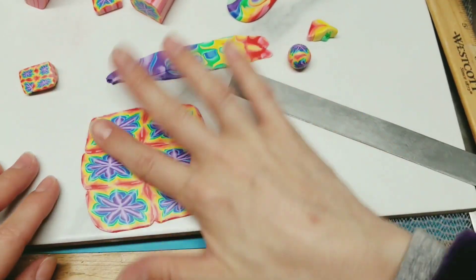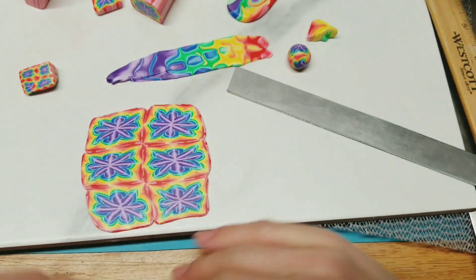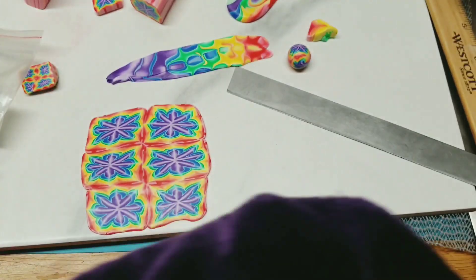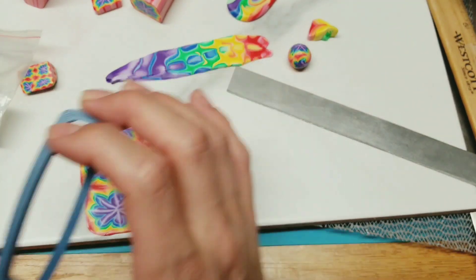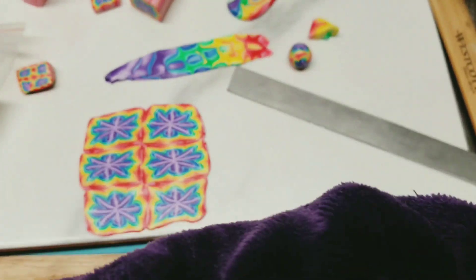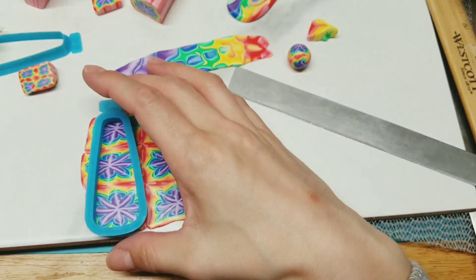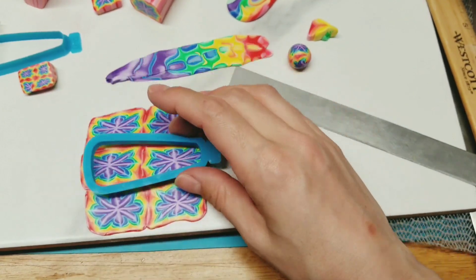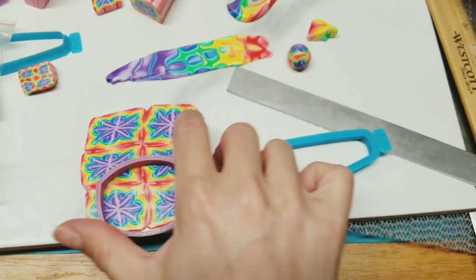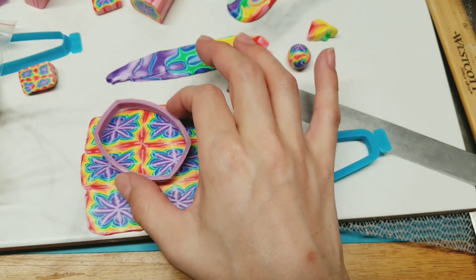I just stretched it out to see what it looked like in the pasta machine. As you know, I'm not a big purple fan. So putting the purple in the center for me probably wasn't the best idea. I should have done it opposite with the purple on the outside and the red in the center.